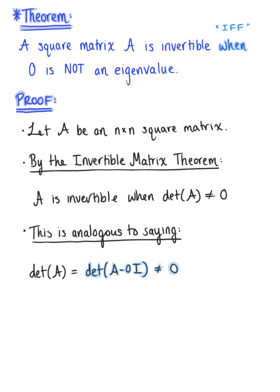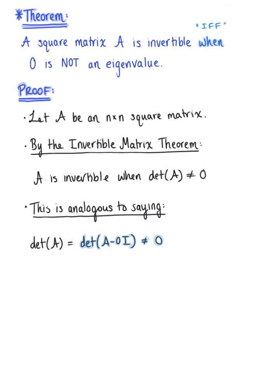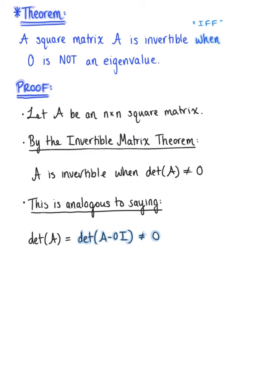Now saying that the determinant of matrix A minus 0 times the identity matrix does not equal 0 is logically equivalent to saying that lambda equals 0 is not a root of the characteristic equation of matrix A.